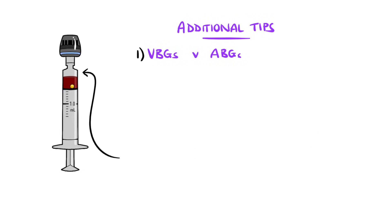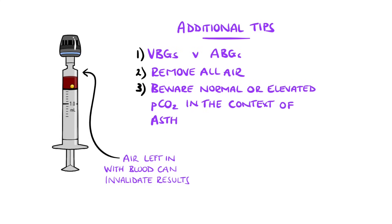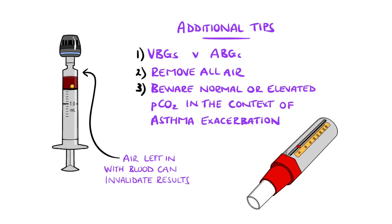It's important that when taking a blood gas, all of the air is removed from the syringe when the blood is drawn, as if air is left in the syringe the gases will diffuse between each other and invalidate the results. A normal partial pressure of carbon dioxide in a patient suffering an asthma attack is a worrying sign, as you would expect hyperventilation and therefore reduced carbon dioxide levels. A normal or high partial pressure of CO2 can indicate that they are tiring, ventilation is decreasing, and they are likely heading towards respiratory arrest.